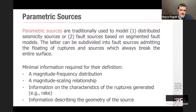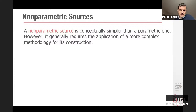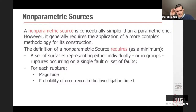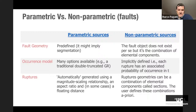The fundamental information for a parametric source is: a magnitude-frequency distribution, a scaling relationship used for defining the finiteness of the ruptures — for both faults and distributed seismicity — the rupturing mechanism, and the geometry of the source. For the non-parametric source, instead, it requires a set of surfaces, each one representing a rupture, and for each rupture we need the magnitude and the probability of occurrence in the investigation time.